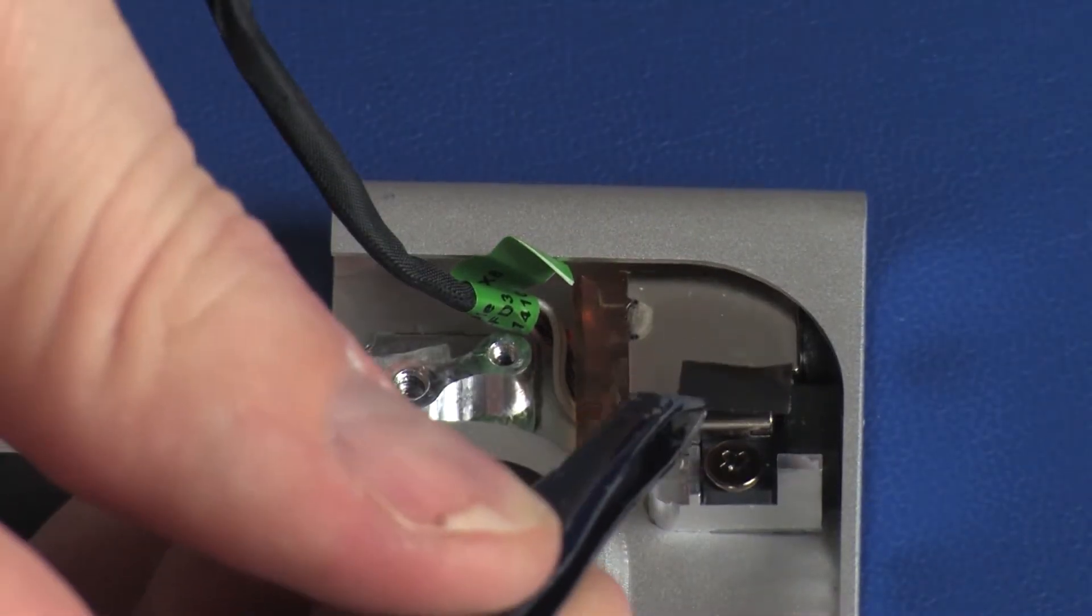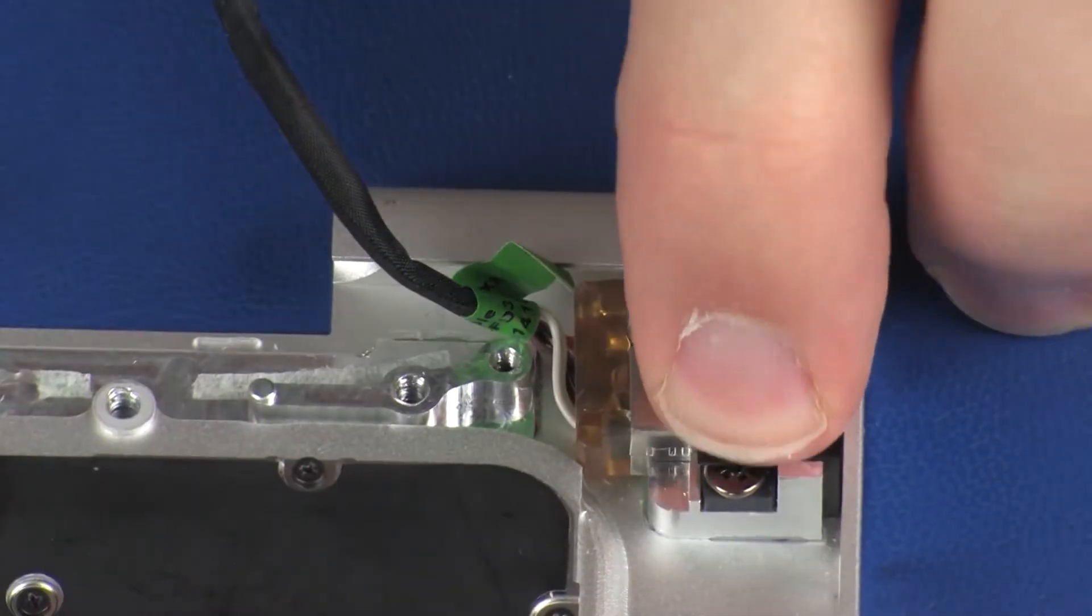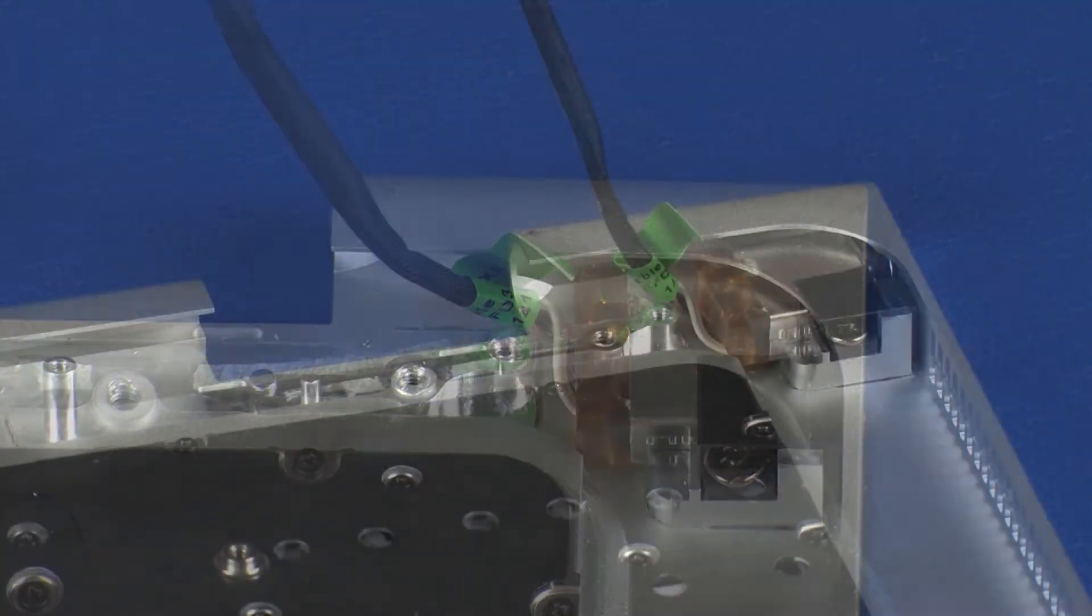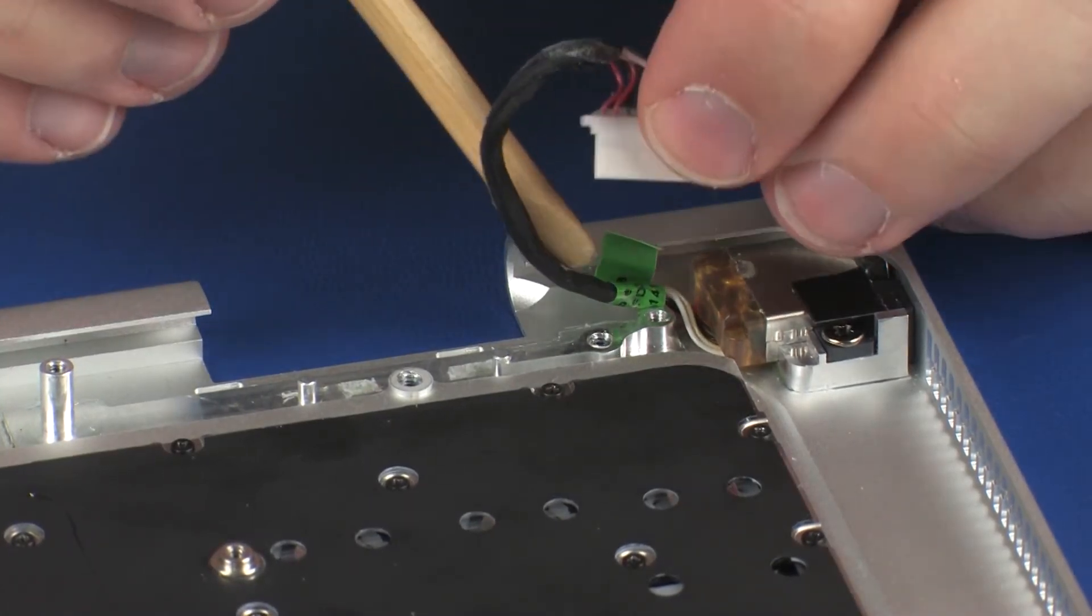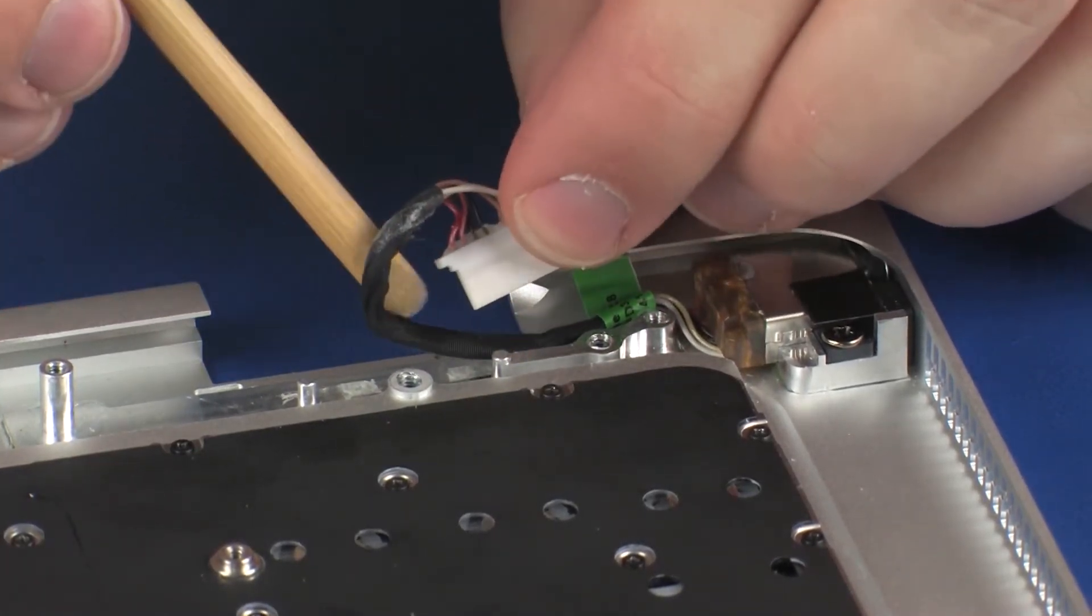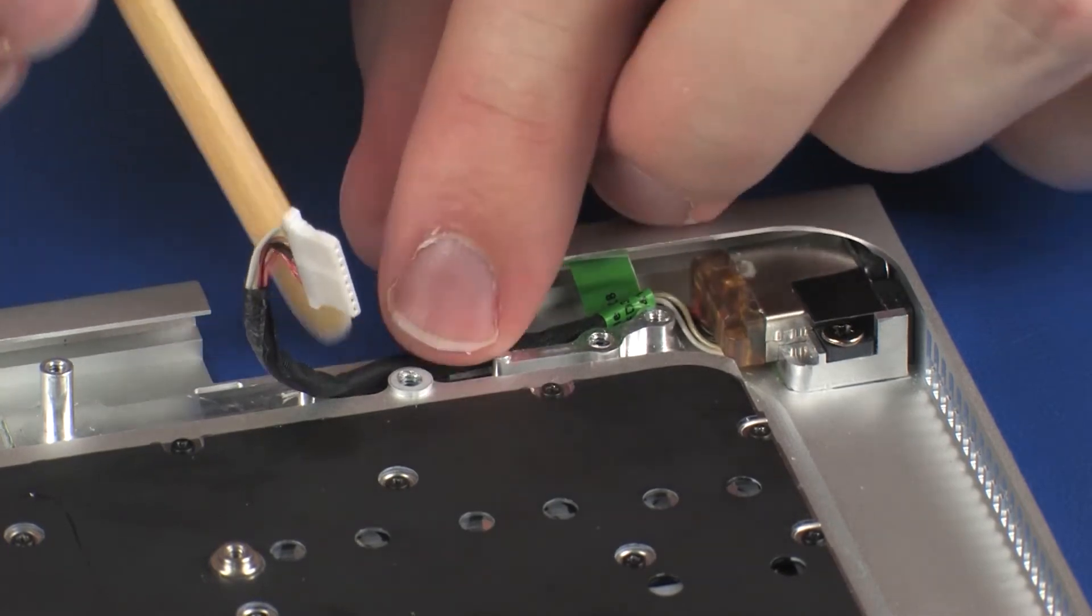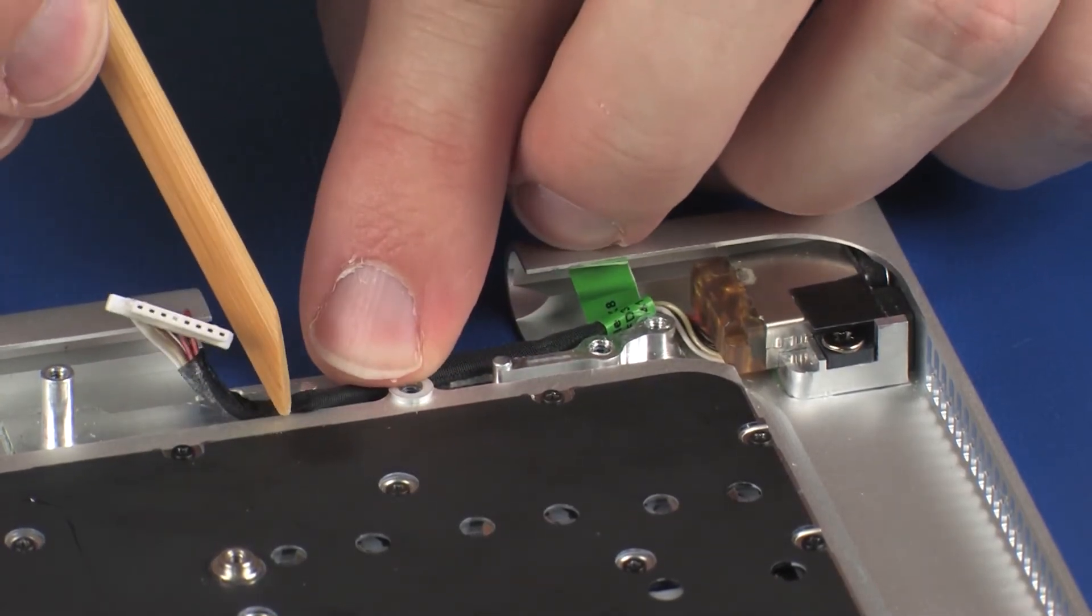Replace the mylar tape that secures the power connector to the top cover. Route the power connector cable through the routing channel that secures it to the top cover, and apply pressure to the length of the cable to secure it into position.